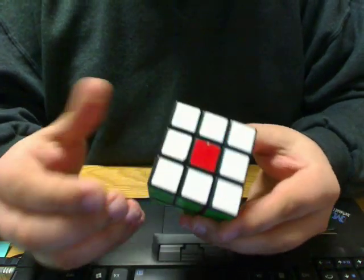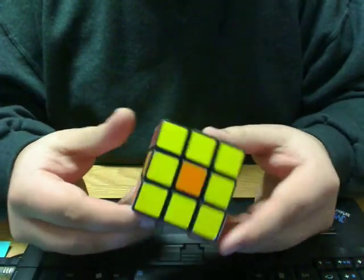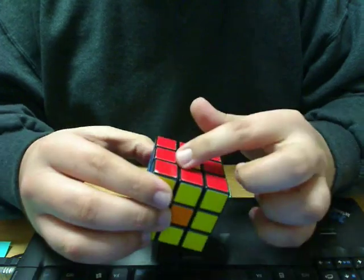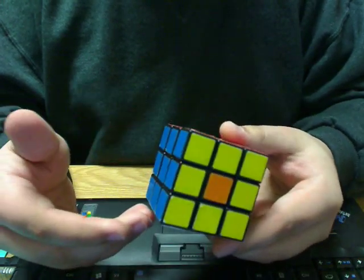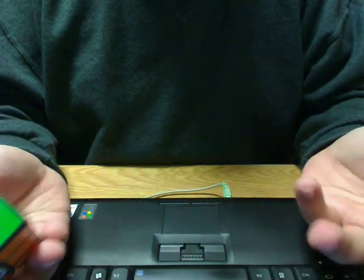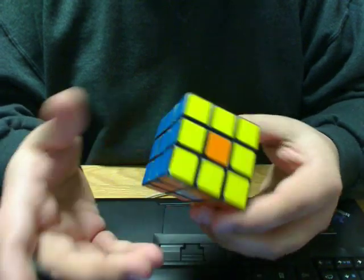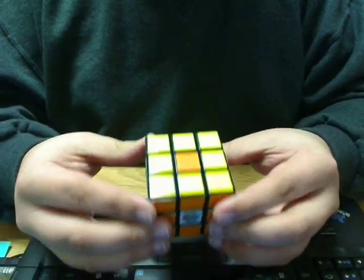And so, once you have it re-solved, you're going to see that the four centers that we jumbled before to solve it are jumbled. But on a Void Cube, once again, they wouldn't be there.